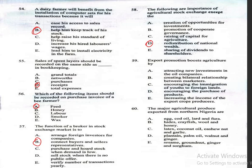Question 59: Export promotion boosts agriculture by A, attracting new investment in the oil companies; B, creating bilateral relationship between marketers; C, encouraging the immigration of youth to foreign lands; D, encouraging the purchase of products; E, increasing the income of the export crop producers. The correct answer is E, increasing the income of the export crop producers.